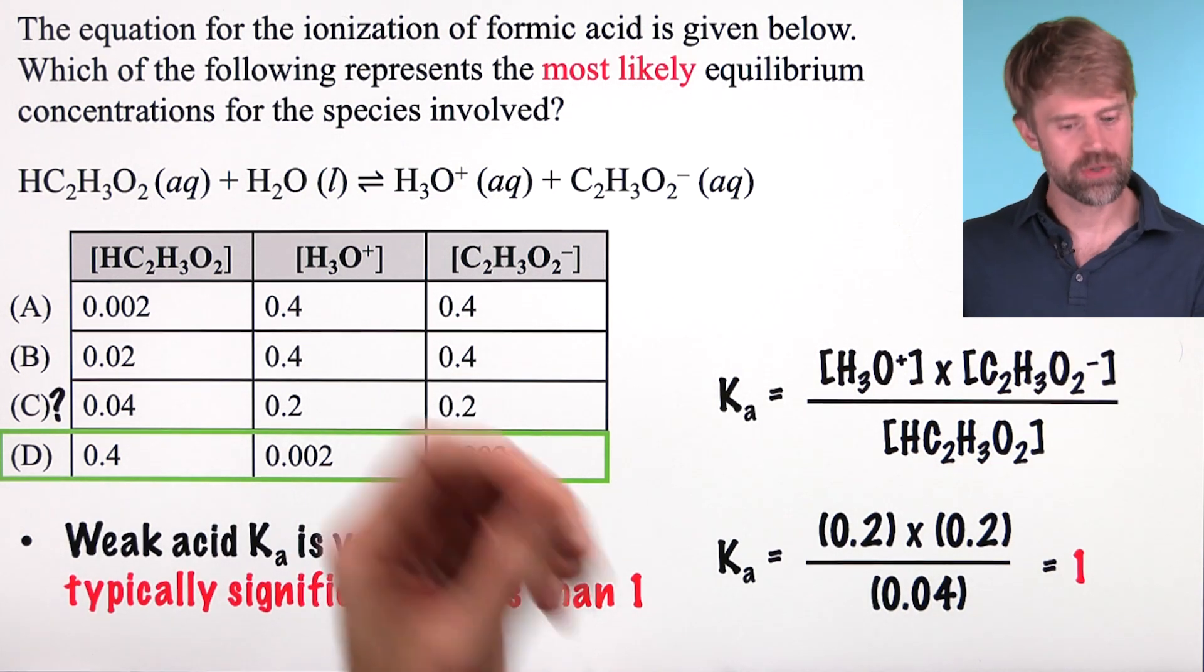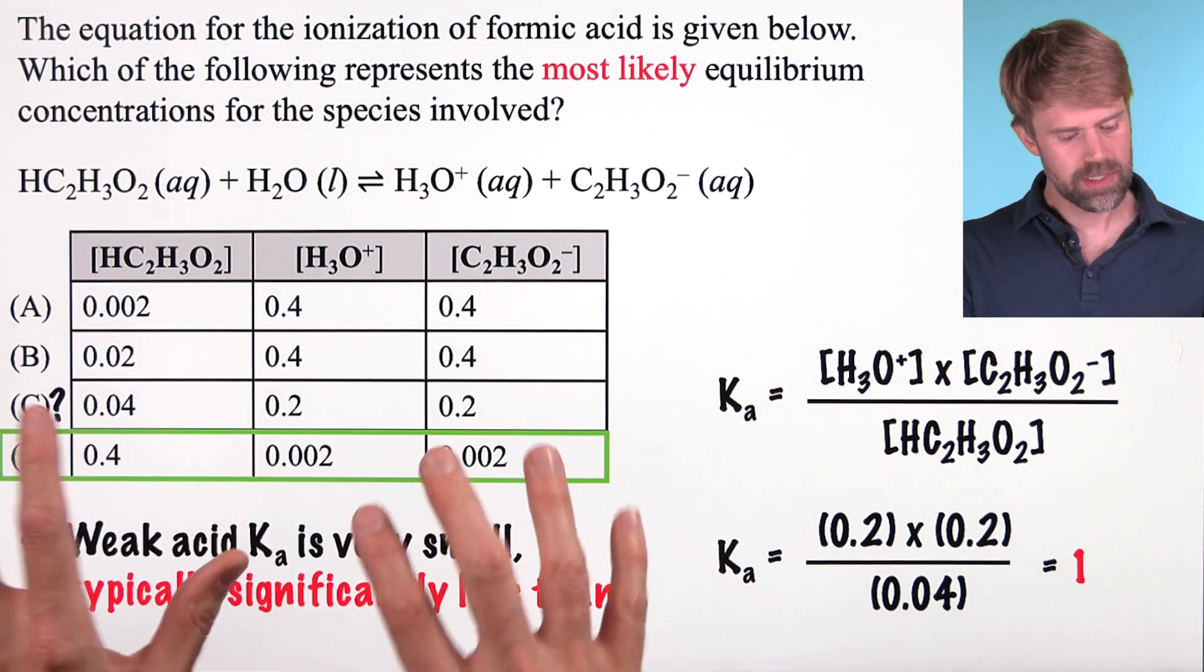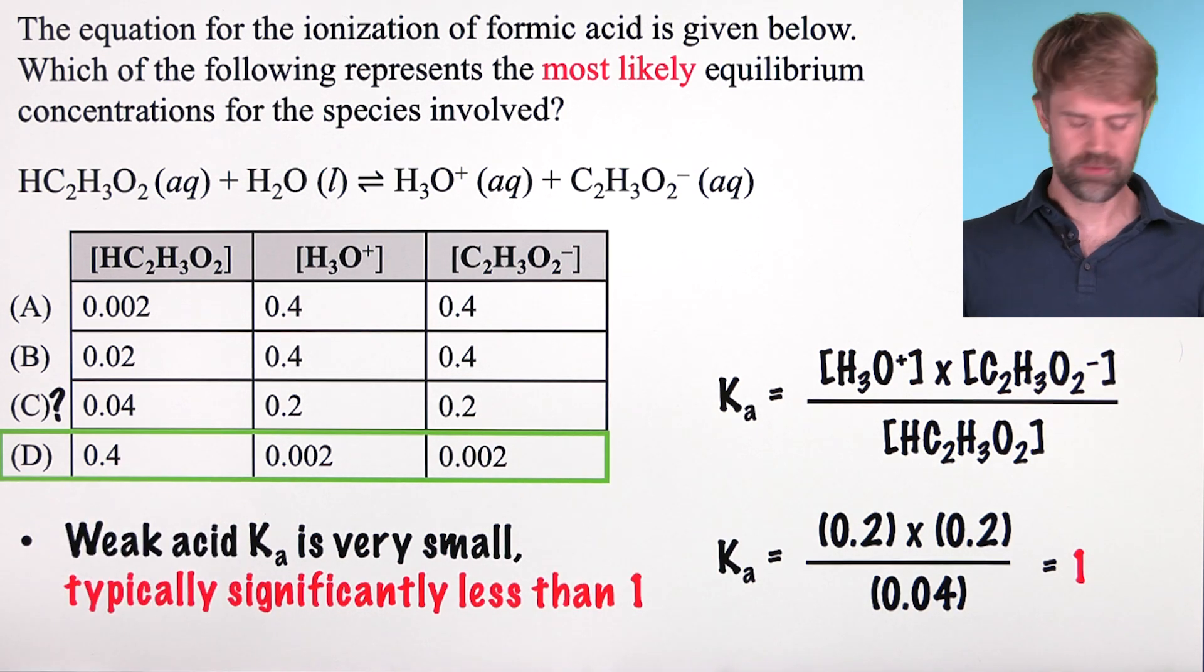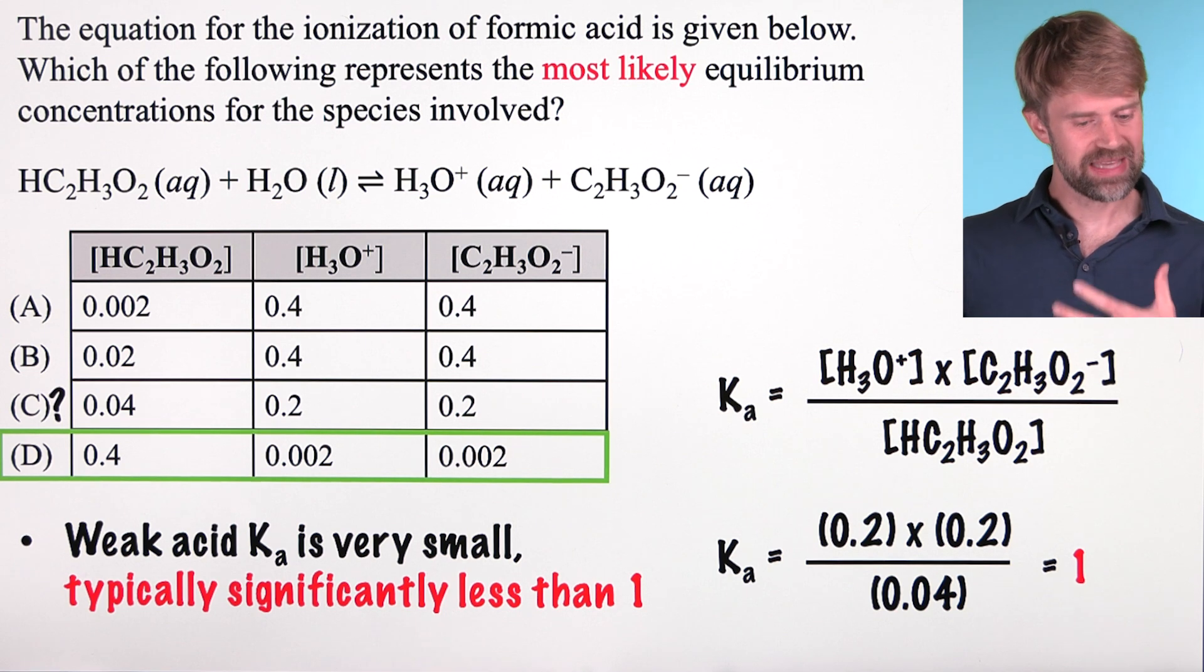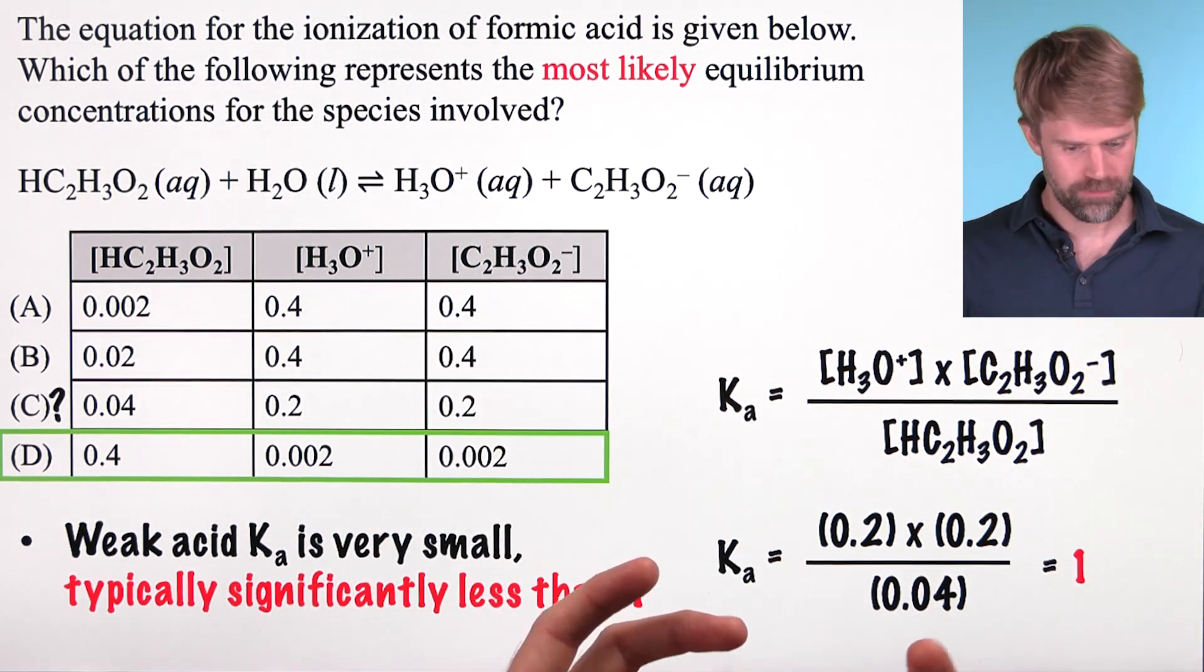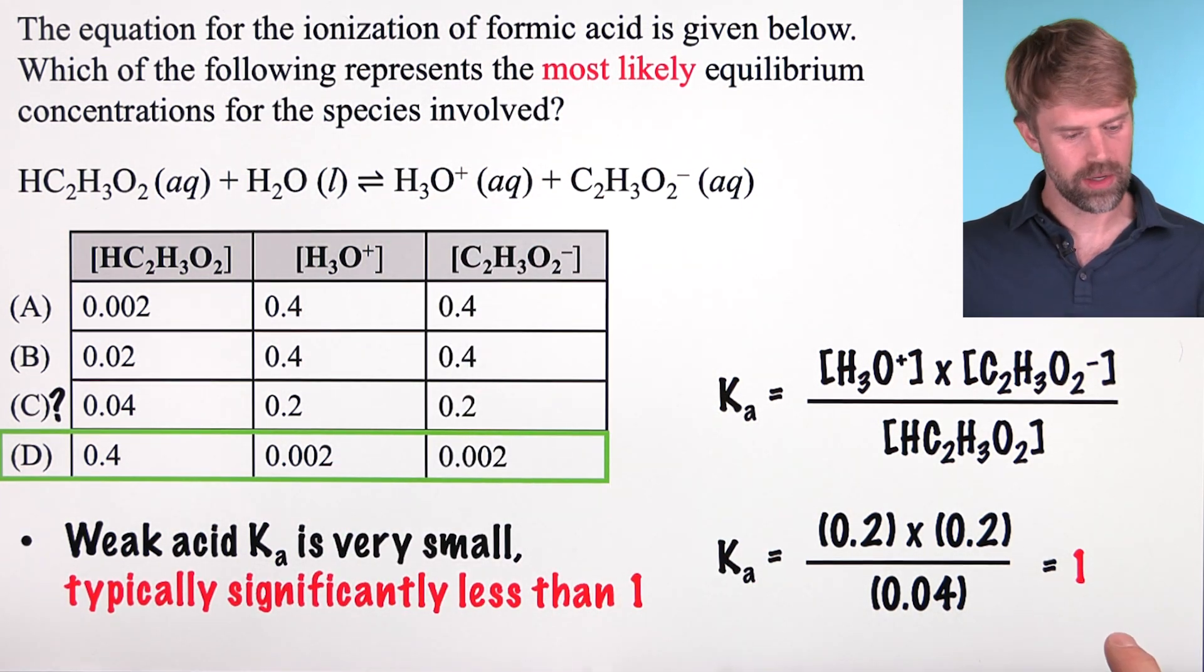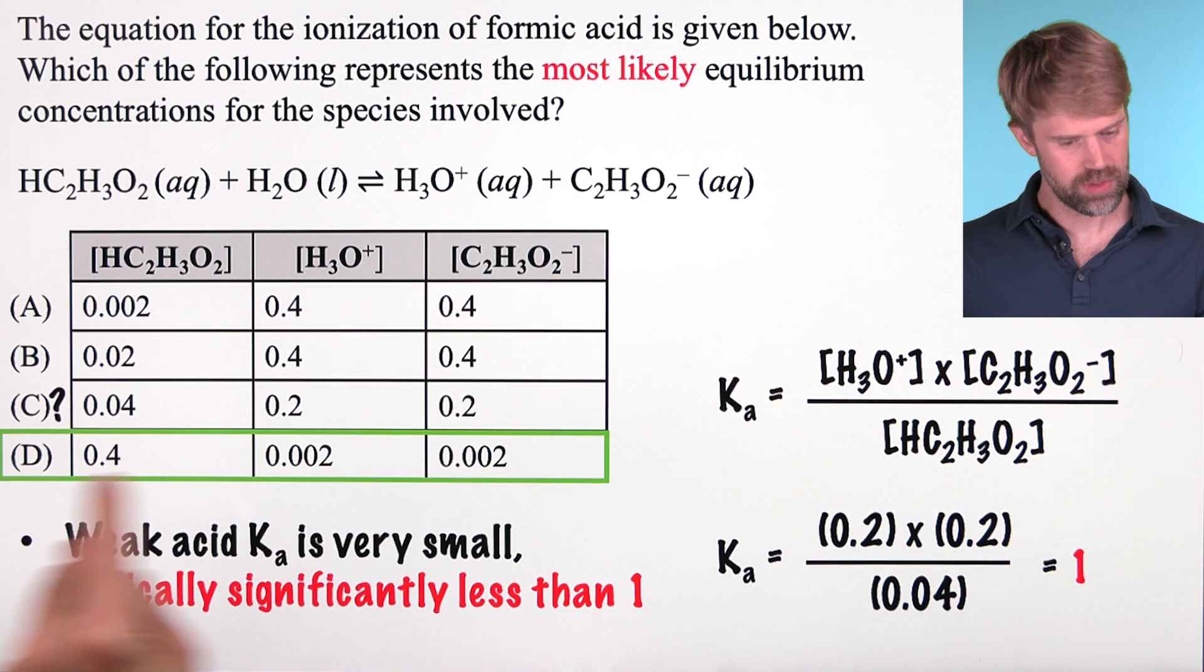Now if you're a very careful person like me, you might be a little bit worried about choice C. It's not big and small but the numbers are pretty close in value. Is that maybe a good choice too? Well, the thing is if you set up the expression, do the math, plug in the numbers, you'll see it comes out to 1. That would be super, super, super big for the Ka of a weak acid. Remember that weak acid Ka's are usually like 10 to the negative 4th, 10 to the negative 5th and even smaller. We're asked for the most likely concentrations here. So a Ka of 1 would not be a good choice for a weak acid. Thus, we can be very confident with choice D. Again, we didn't even have to do the math.